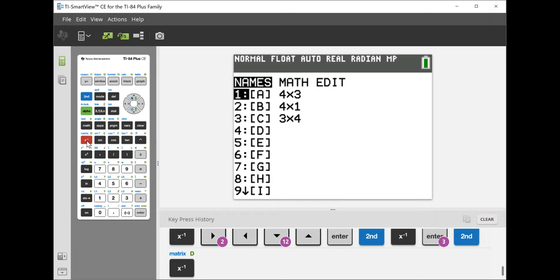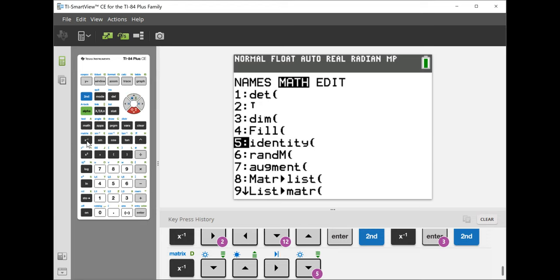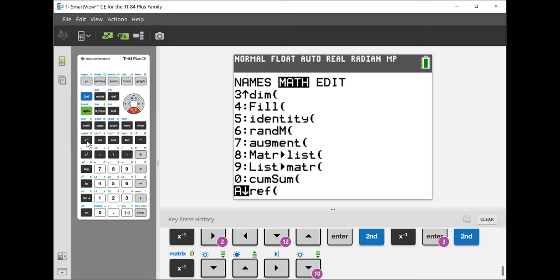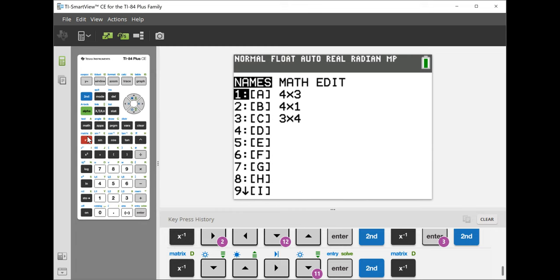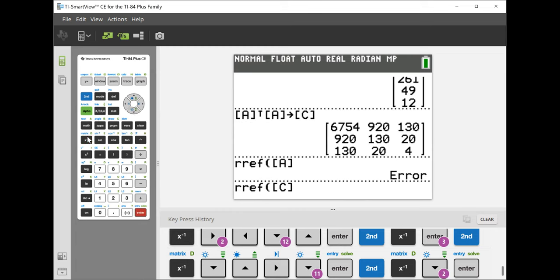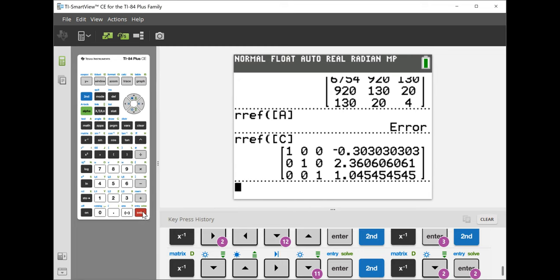First of all, I hate that this calculator won't just do stuff where there are more rows than columns, but also in fairness to the calculator, I did give it the wrong matrix. We are performing row echelon reduction on C. And we get these coefficients.